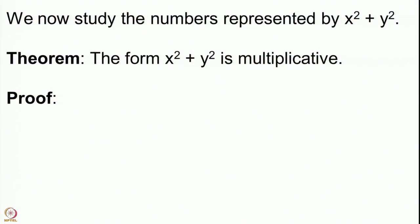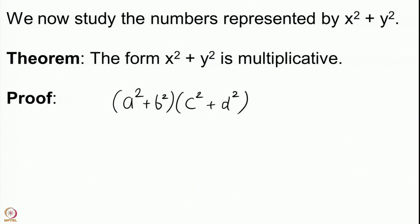We are going to study all integers represented by x² + y², but this form has a very peculiar and nice property we will see in the next slide: the form x² + y² is multiplicative. What I mean by this is that if I take a² + b² and multiply it by c² + d², then this is again a sum of 2 squares. This is very remarkable: if I take 2 numbers represented by the form and multiply them, the product is also represented by the form.